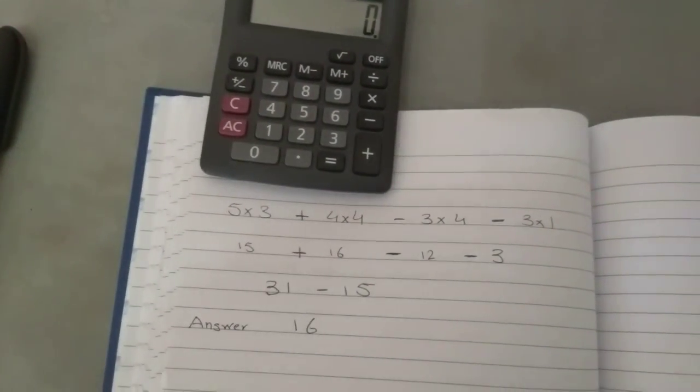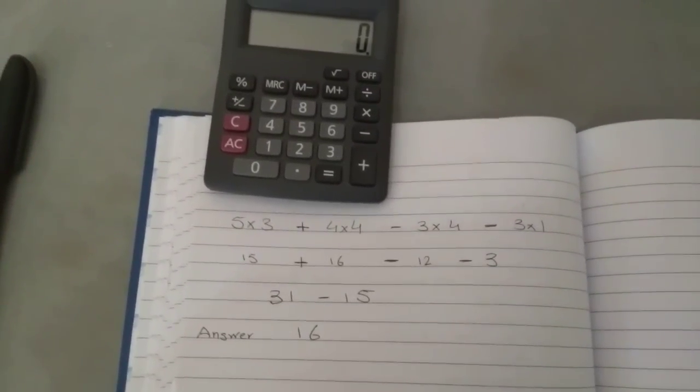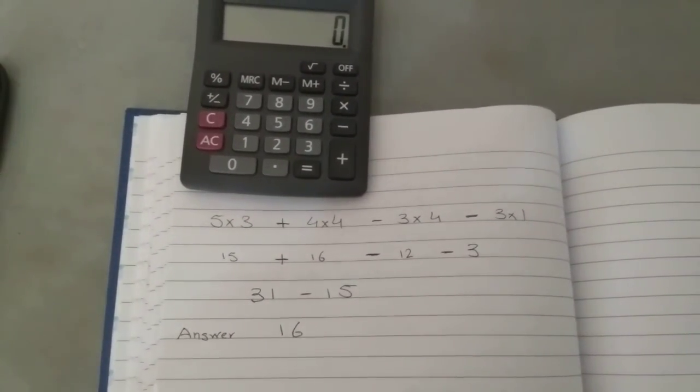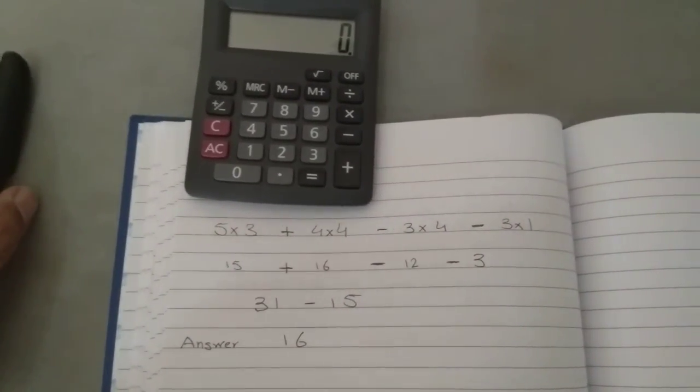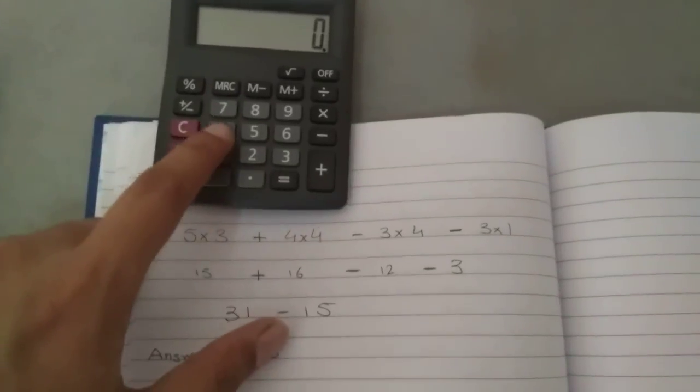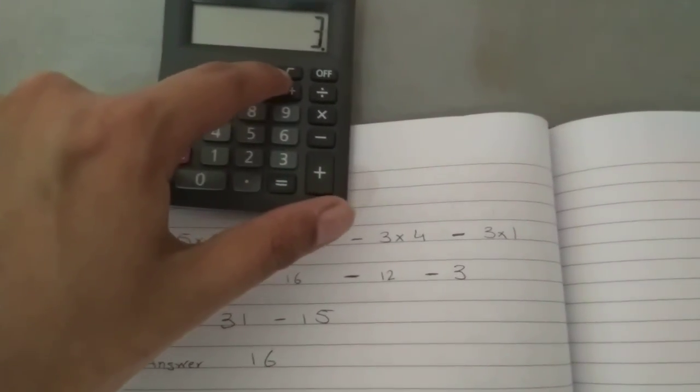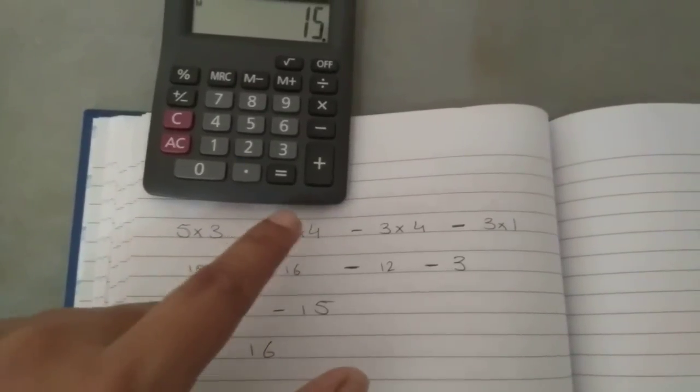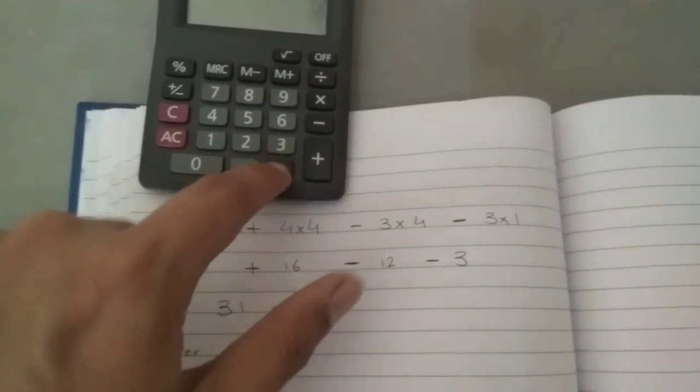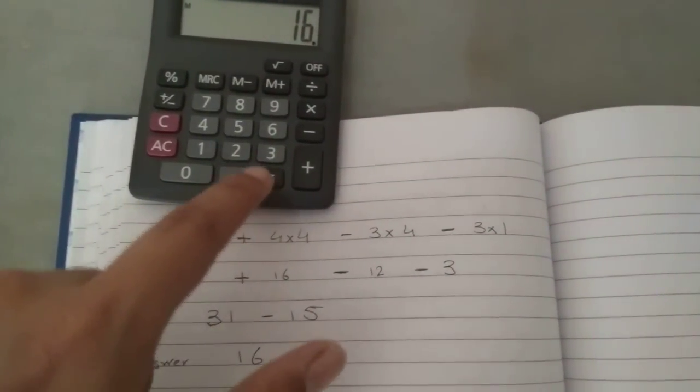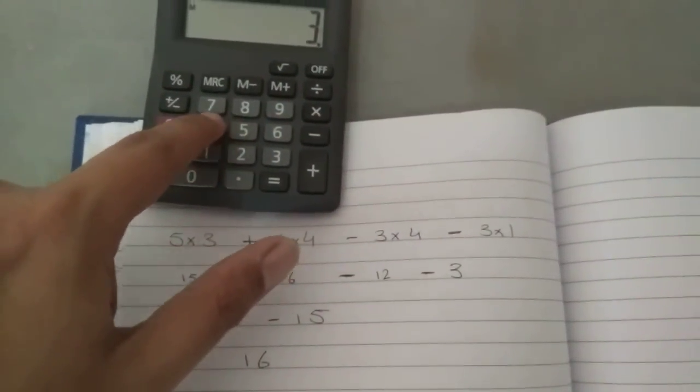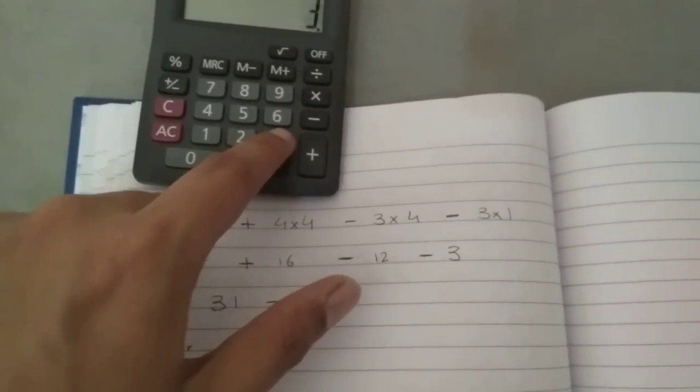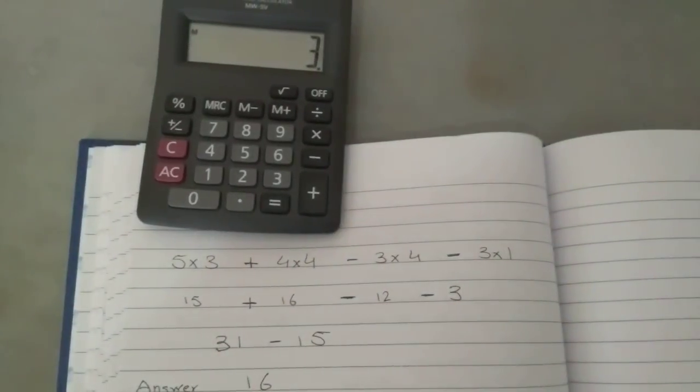If you want, you can repeat the video and you can see what I did, or I'm going to do it again quickly. 5 multiplied by 3, equal to 15, then press M+. Then 4 multiplied by 4, equal to 16, then save it again. Then 3 multiplied by 4, then M minus because here is a minus sign. Then 3 multiplied by 1, again M minus.